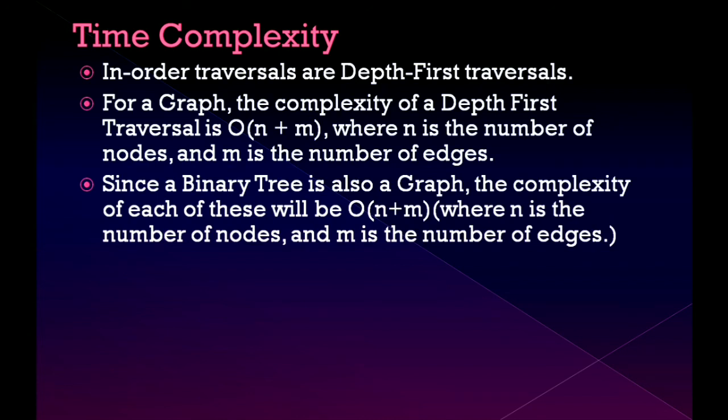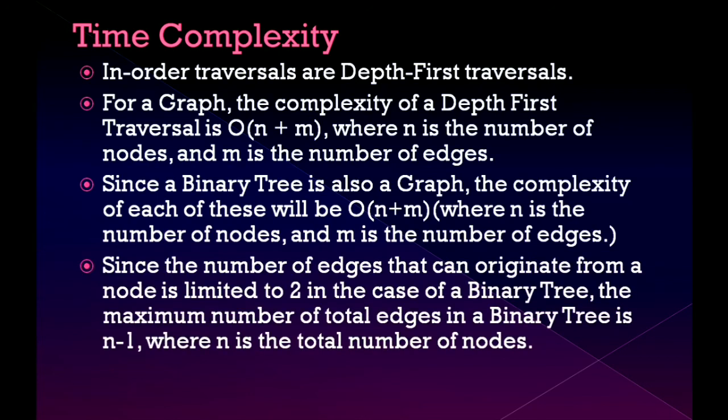Since a binary tree is also a graph, the complexity of each of these will be O(n + m). Since the number of edges that can originate from a node is limited to 2 in the case of a binary tree, the maximum number of total edges in a binary tree is n-1 where n is total number of nodes.